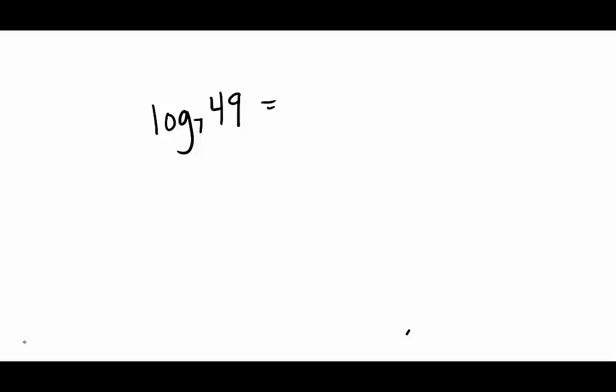This is a simple problem if you understand what logs really mean. 7 is the base, 49 is the number or the answer. The log problem is looking for the exponent. What exponent makes a 7 into a 49? We have the 7, we have the 49. What we don't have is the exponent. So 7 to what exponent is 49? And the answer is 2.